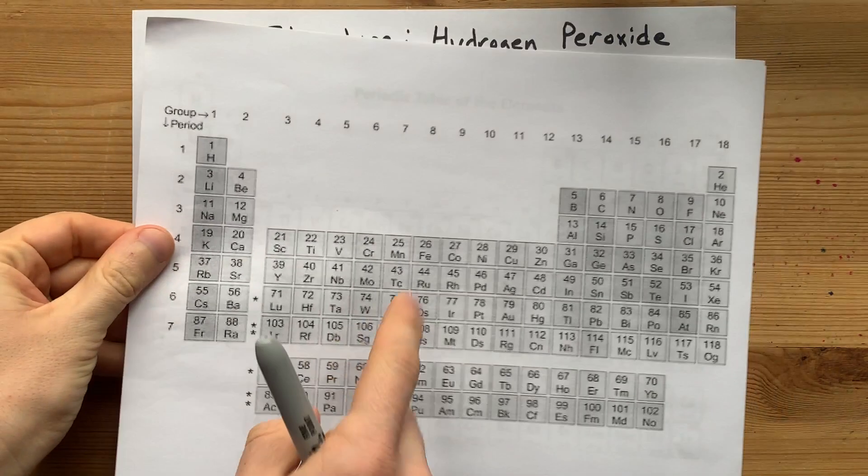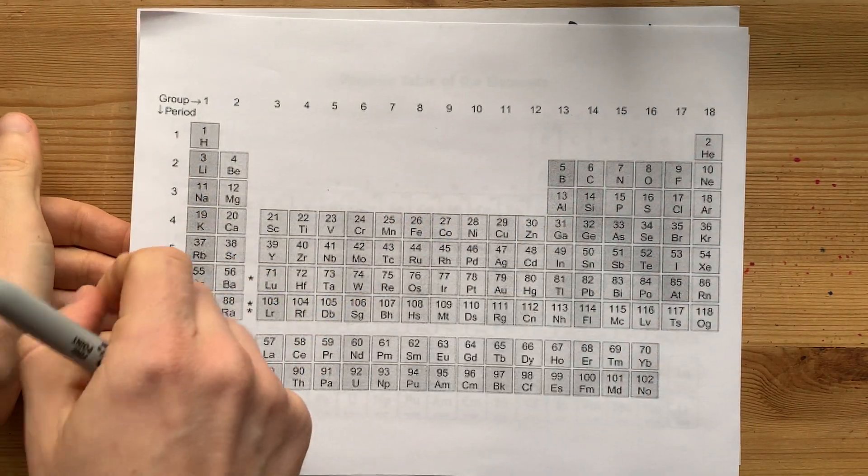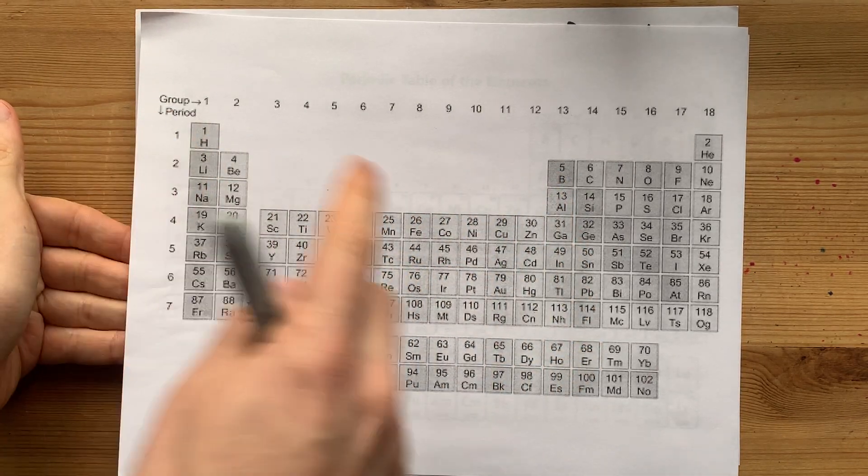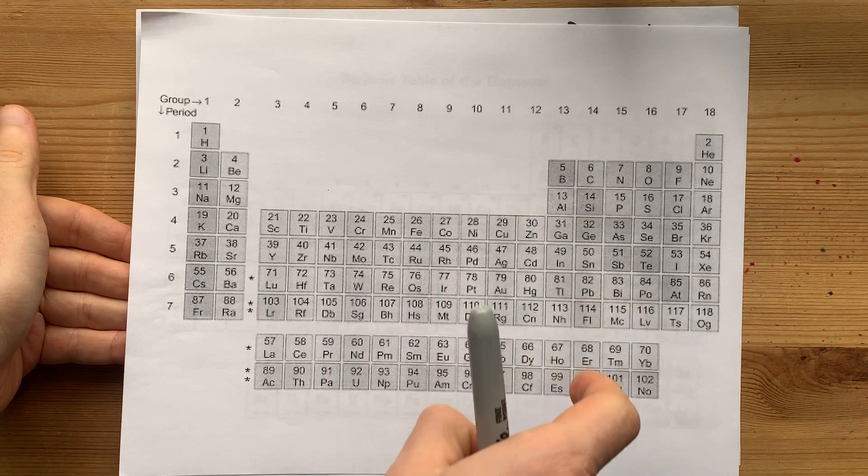Now the first thing to note is that hydrogen, even though it's on the left side of the periodic table, counts as a non-metal. It's the only non-metal to the left of the staircase. See the darkened staircase here?